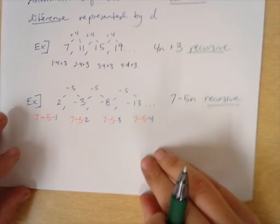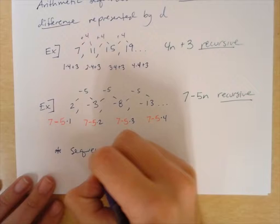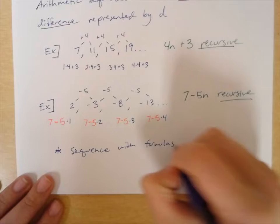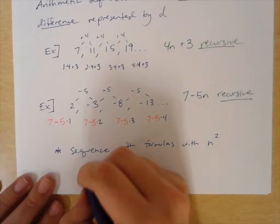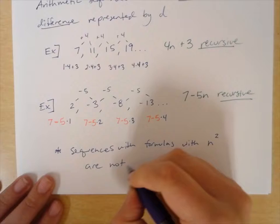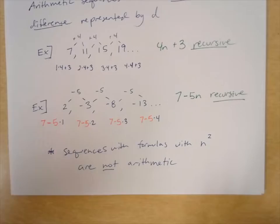Let's make a quick note here. Sequences with formulas involving an exponent — anything with n to an exponent or n squared — are not arithmetic. Only sequences where we're doing multiples of a number or adding or subtracting constants are arithmetic. Never when we have an exponent would that be an arithmetic sequence.